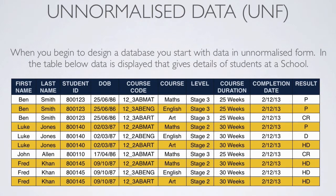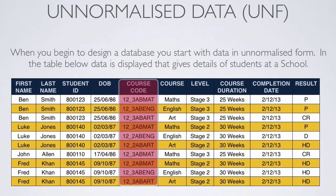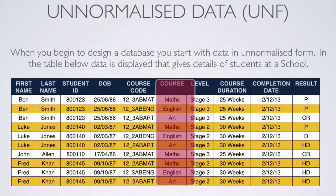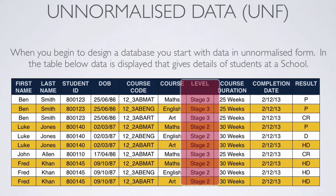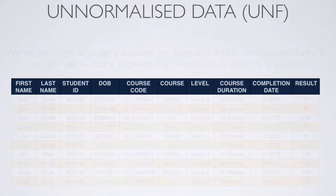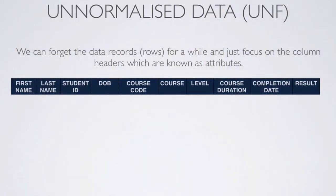Within our course code, we can see the same course code appearing multiple times. Even with the first name and last name, we see students appearing multiple times. In the course column, we've got maths, English, and art appearing more than once. In our levels, we've got stage 3, stage 2, and stage 1. Each time, those things need to be entered multiple times when updating or deleting data — those are the anomalies we spoke about before.